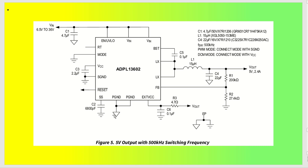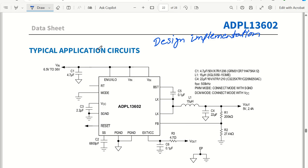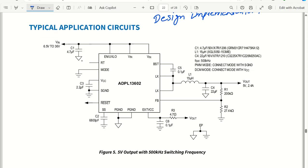Now we will move directly into application design implementation. Let's say we have to design a 12-volt to 5-volt system with 2.4 ampere or 2 ampere output current. The datasheet itself provides around 2-3 application examples for different output voltage levels, which is the best way to understand the values of capacitors, inductors, and resistor dividers. We will use the equations from the datasheet to calculate all values on our own.